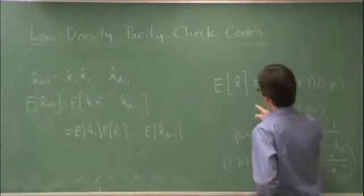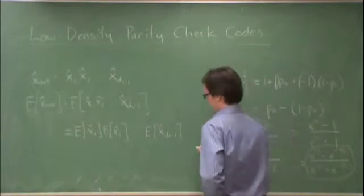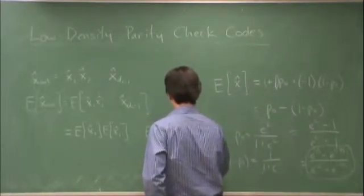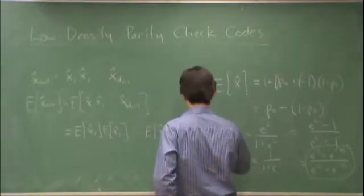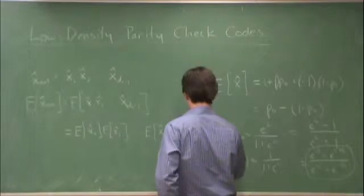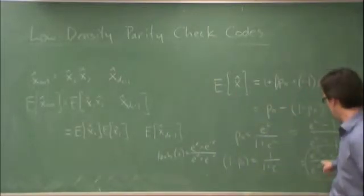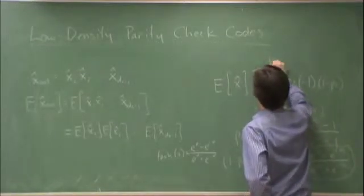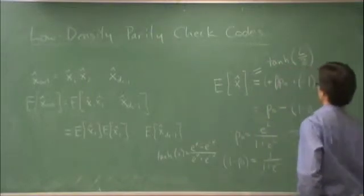So this is equal to expected value of x hat. Let me just write this: tanh of x is equal to e to the x minus e to the minus x divided by e to the x plus e to the minus x. Therefore, expected value of x hat is equal to tanh of L over 2, the log likelihood ratio over 2.